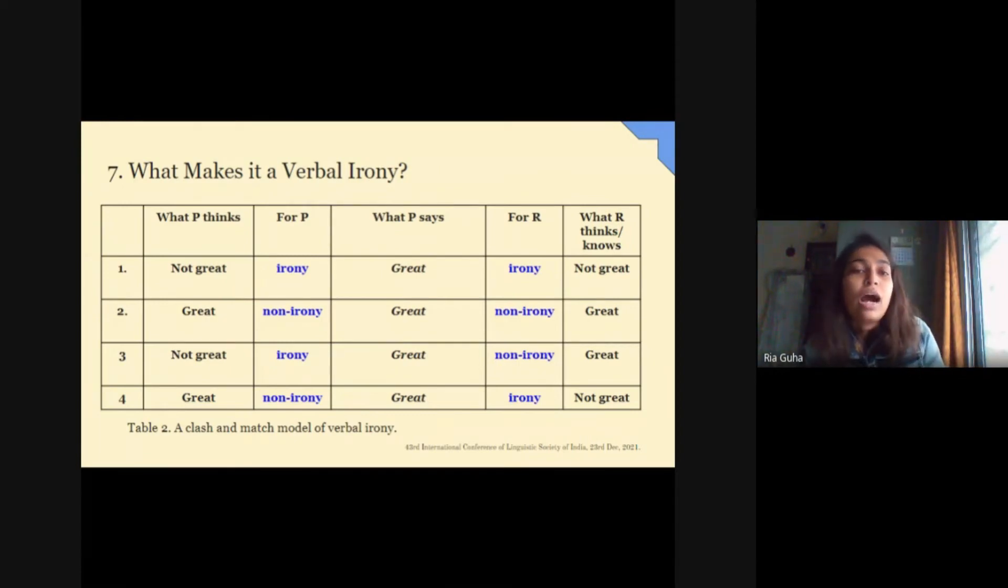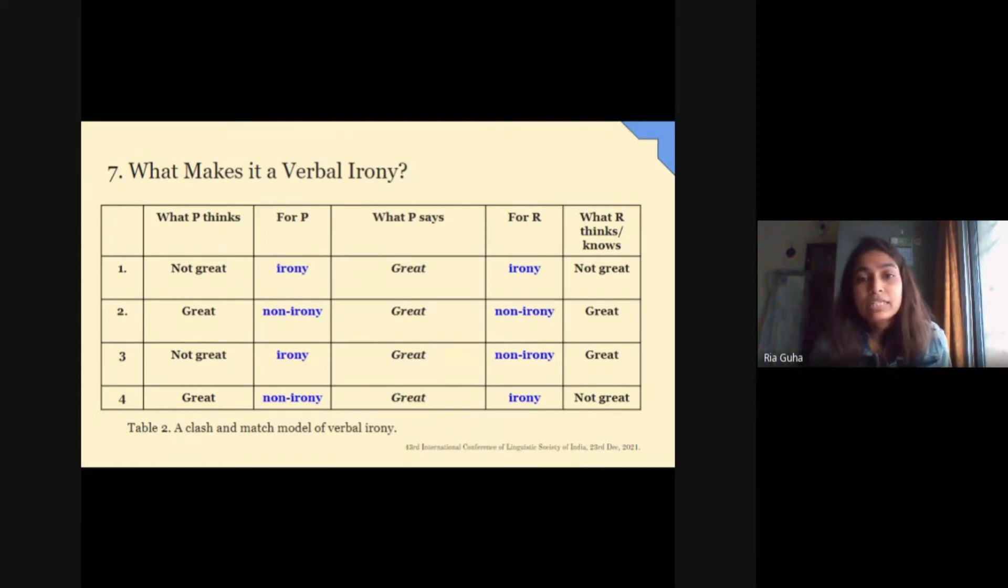You can see here, suppose R the receiver gave a performance and P said you did great. If this utterance clashes with the producer's belief, it will be an irony for her. If it matches her belief, it will be a non-irony for her as in 2. Just like that, if the utterance clashes with the receiver's beliefs, it will be an irony for her, but if it matches, it will be a non-irony for her. Interestingly, even if it is an irony for the producer but it matches with the receiver's belief, she may miss the irony and take it sincerely.